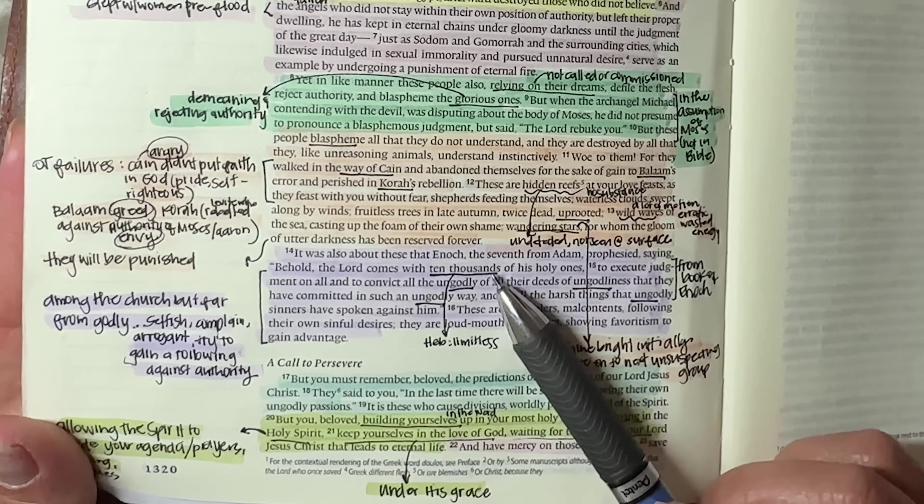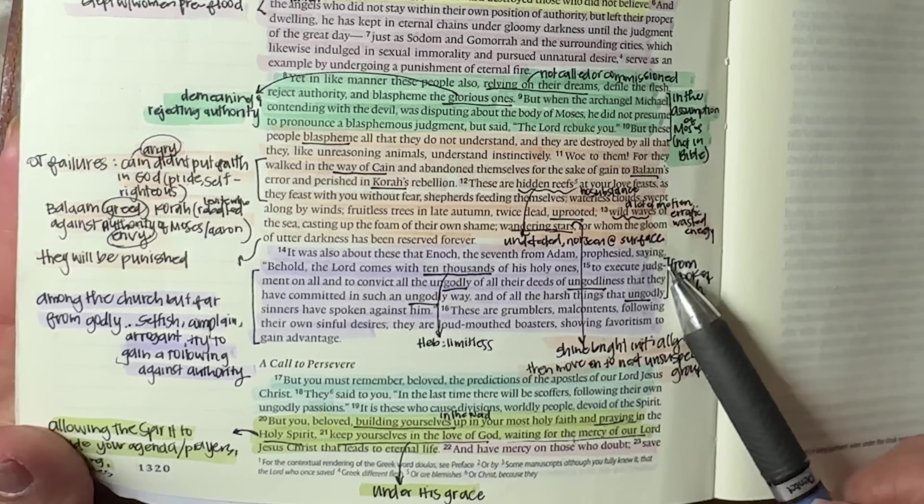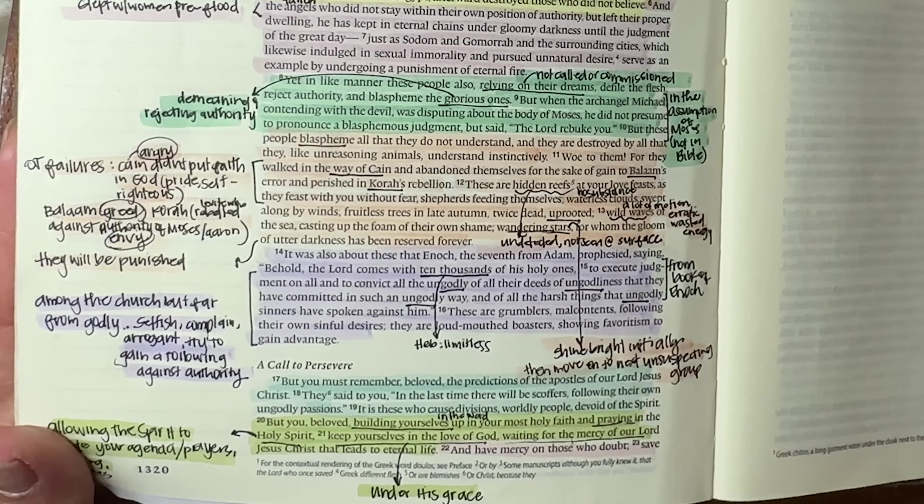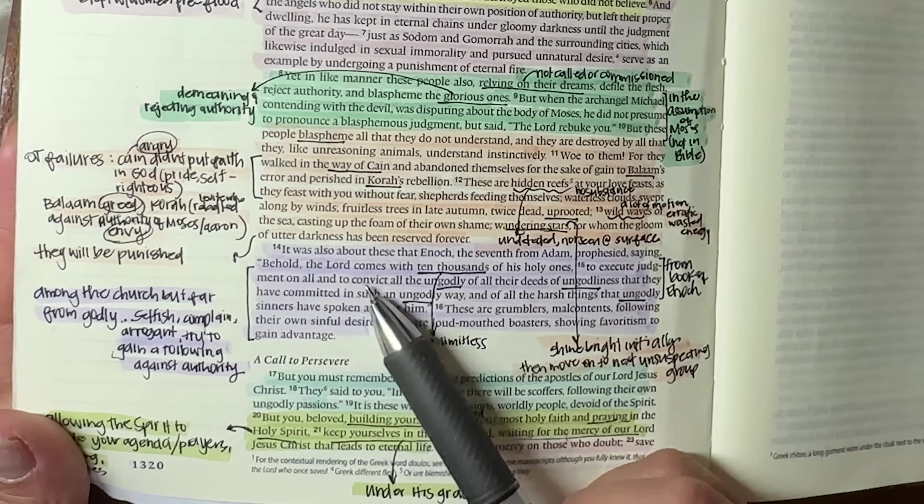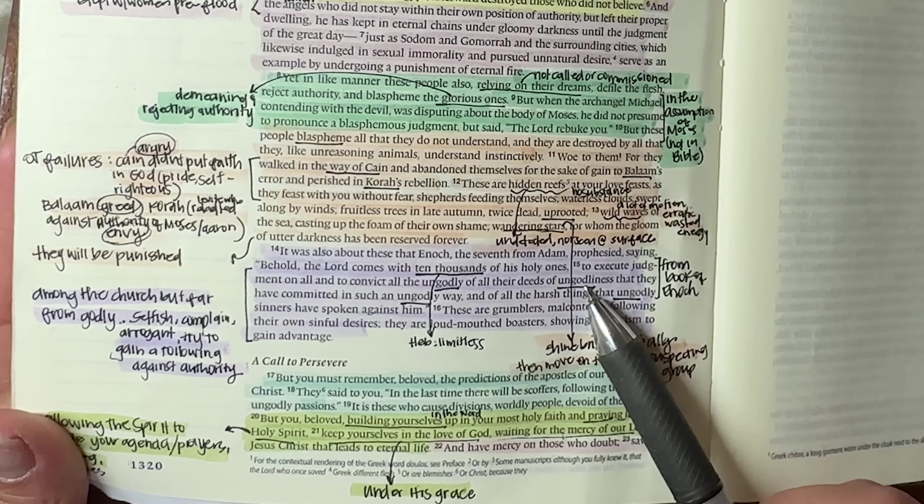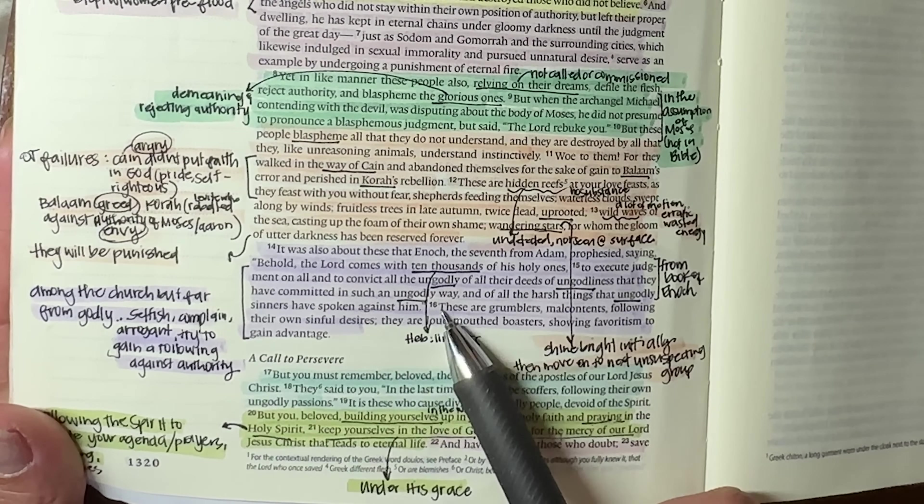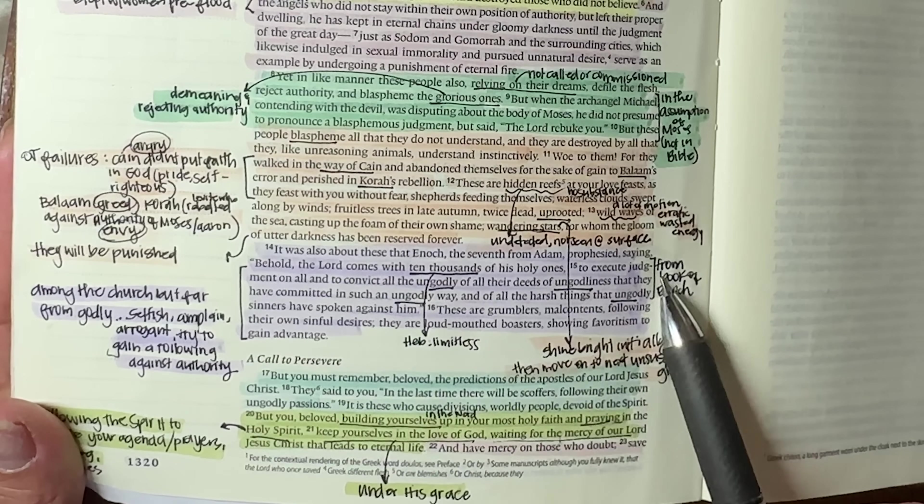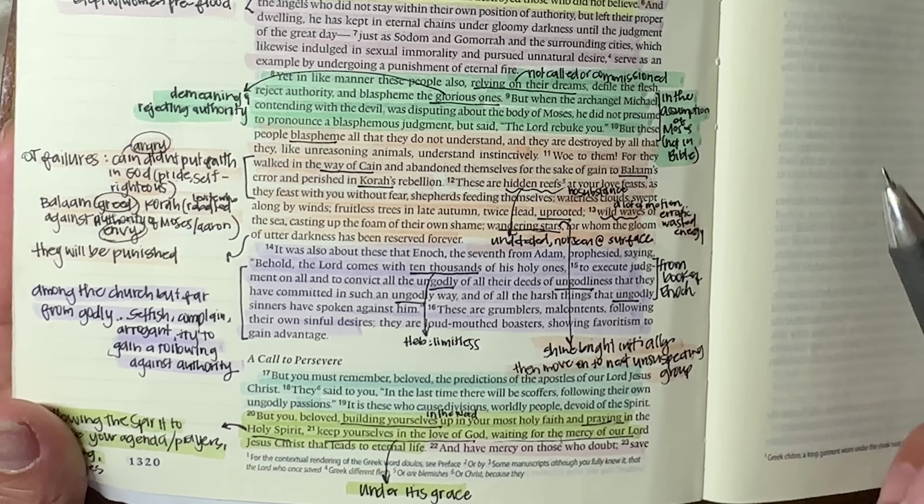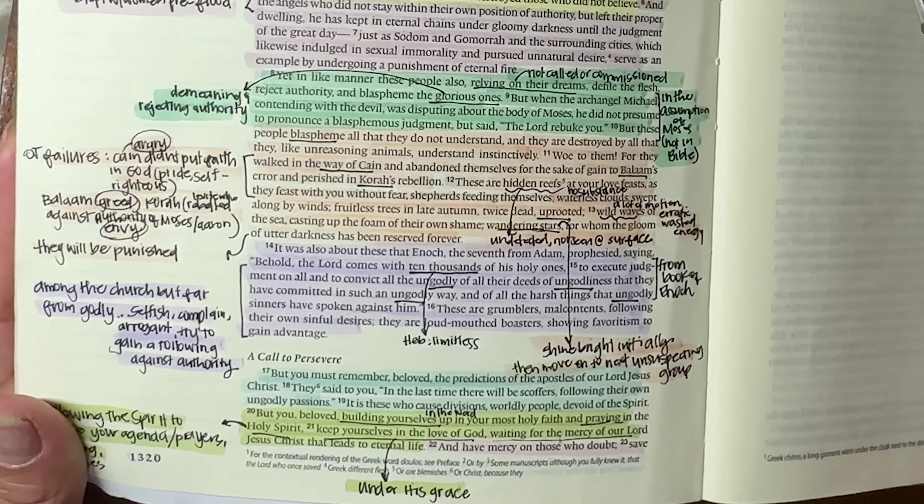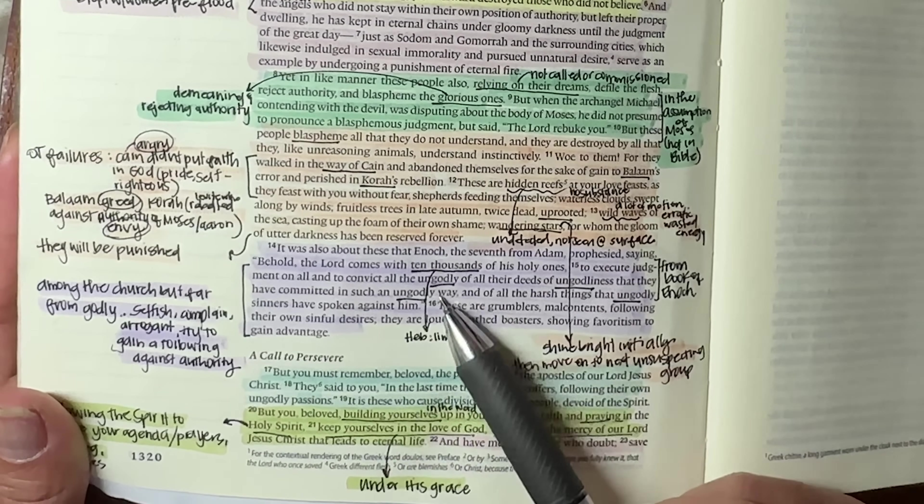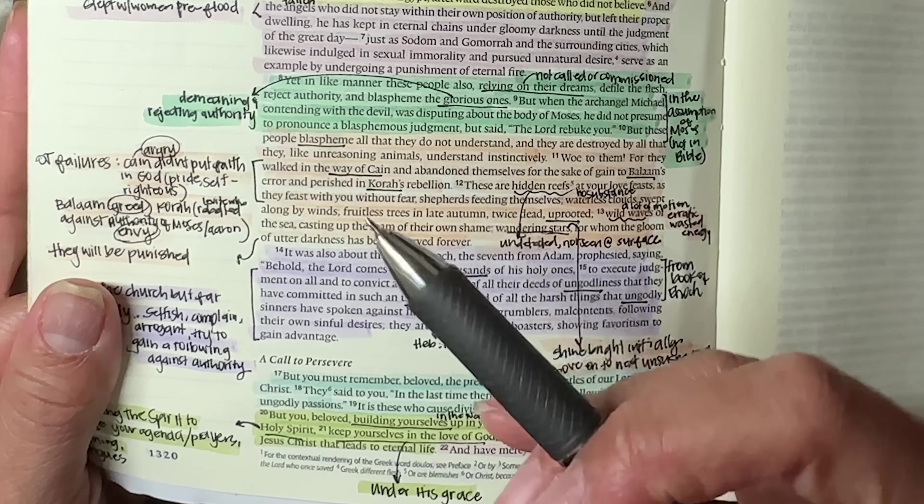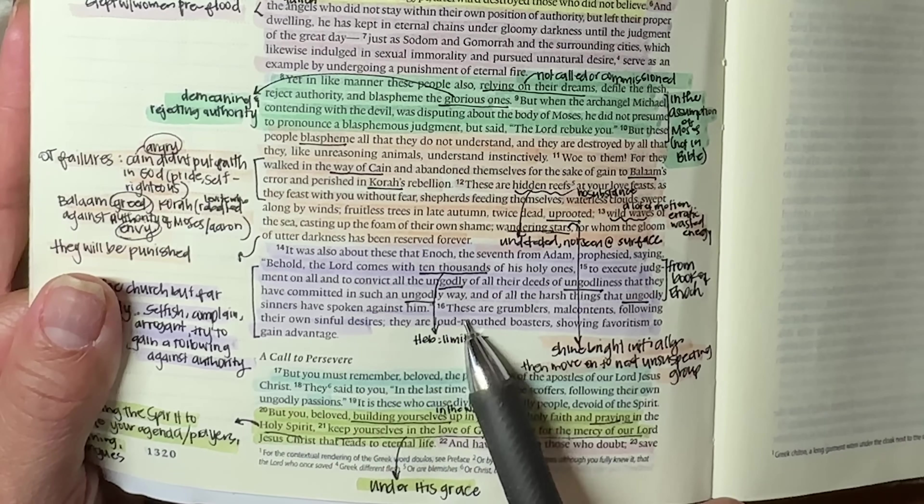It was also about these that Enoch, the seventh from Adam prophesied saying, behold, the Lord comes with 10,000 of his holy ones. And this is basically a Hebrew word that means limitless amount of holy ones to execute judgment on all and to convict all the ungodly of all their deeds of ungodliness that they have committed in such an ungodly way. And all of the harsh things that the ungodly sinners have spoken against him. So notice how many times he says ungodly, like let's get this right here. These guys were ungodly. They had ungodliness. They were living in an ungodly way and they are simply ungodly sinners. Okay. So they may be among you, but they are far from godly. And by the way, this is a quote that comes from the book of Enoch, which also not in the Bible.